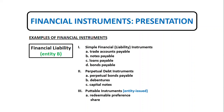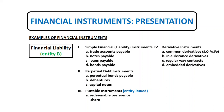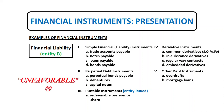We also have puttable instruments issued by the entity itself. For example, redeemable preference shares — in their legal form they are equity instruments, however in their accounting and economic substance form they fall into financial liabilities, since redeemable preference shares have a maturity date. We also have derivative instruments, including common derivatives, in-substance derivatives, regular way contracts, and embedded derivatives. Embedded derivatives are naturally in the financial liability classification or involve non-financial item classification. For other debt instruments, we have overdrafts and mortgage loans. Financial liability is more on the unfavorable side to the entity.